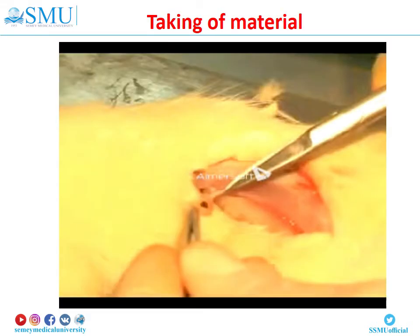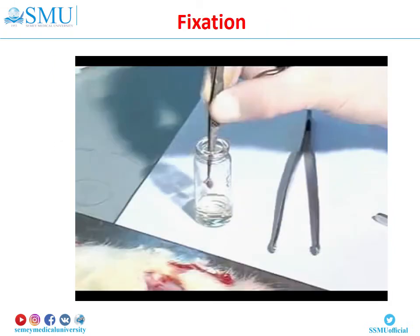Small portions of tissue, usually less than 0.5 cm in thickness, are removed from the animal as soon as possible after death and immersed in a special preservative fluid – a fixative. Fixation kills the cell quickly, stops the post-mortem degenerative processes, and preserves the structural integrity of the cellular components of the tissue.